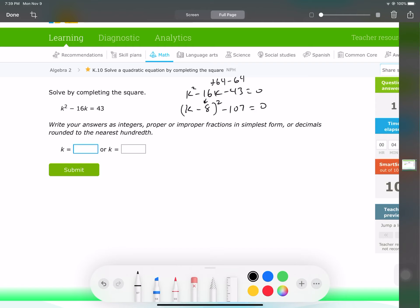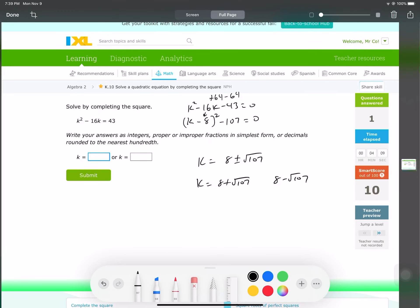And now we can solve it. Get rid of the 107, the square, and the 8. k is equal to 8 plus and minus the square root of 107. Again, this is two answers. k could be 8 plus square root of 107, and 8 minus square root of 107. And that's just us plugging that into the calculator.